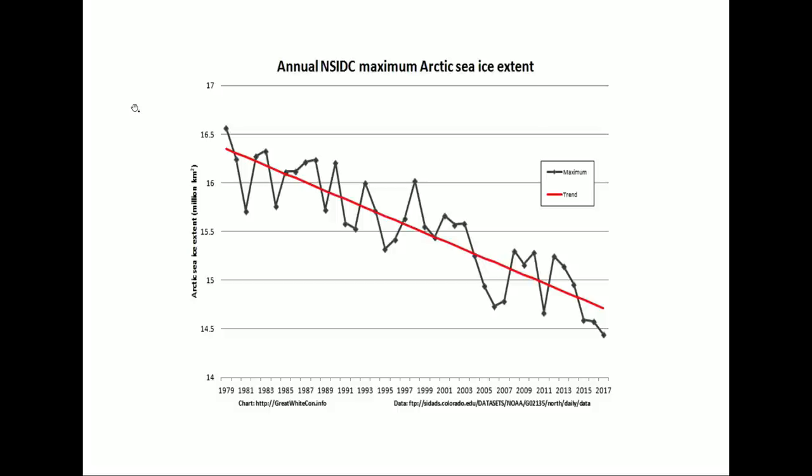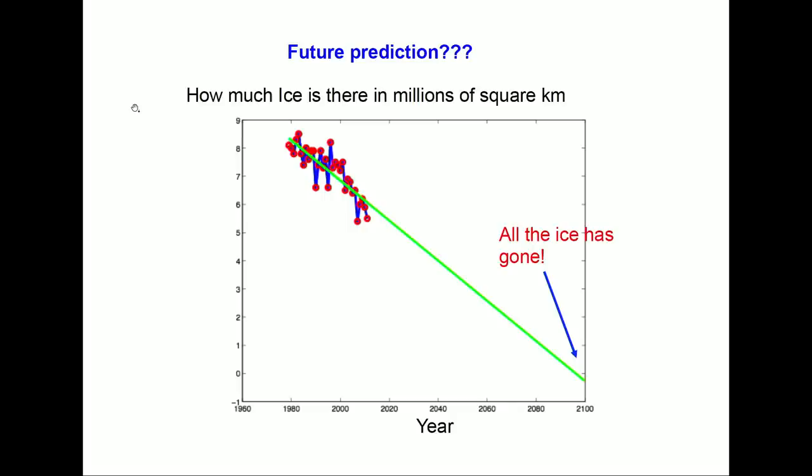The next finding is a bit worrying. If we continue that trend, by the end of this century all the ice is gone. Colleagues at the Hadley Centre have different models that predict all the ice will be gone in 30 years. This shows how you need to wait a while and be very careful about the way you make predictions based on the data we have.